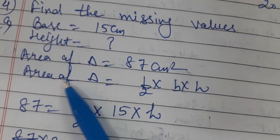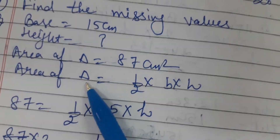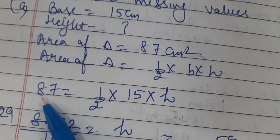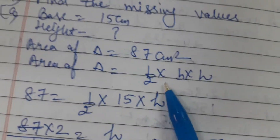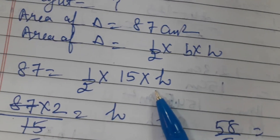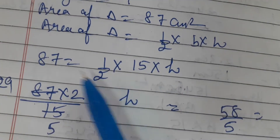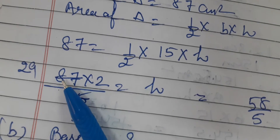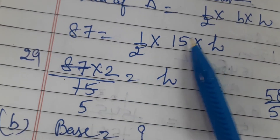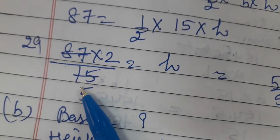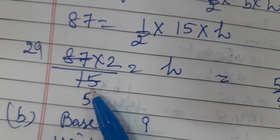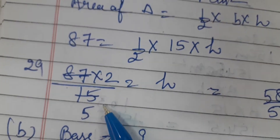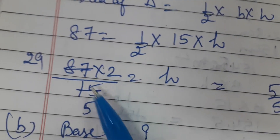The formula of area of a triangle is half into base into height. Area of triangle is 87, equal to half into base 15, and height is not given. We rearrange: 87 multiplied by 2, divided by the denominator. I will cancel all these numbers using the table of 3.